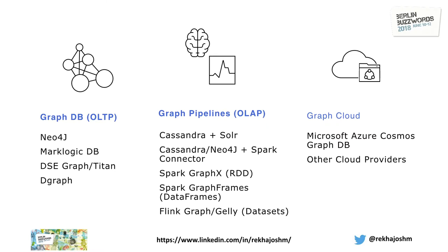DGraph is something I only recently heard of — it is a database system built on Go. Go is another powerful language people are developing because of its performance versus Java and C++. It is also worth a look. In brief, it is a Go database that gives you online transaction processing — as a transaction is happening, it is getting saved in the database, so when you query, you have easy retrieval of data rather than using RDBMS.